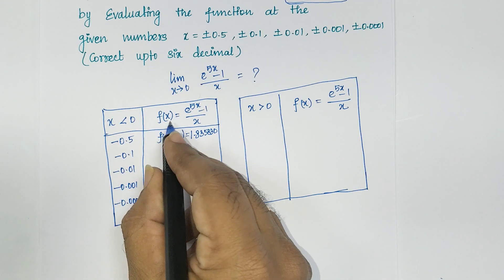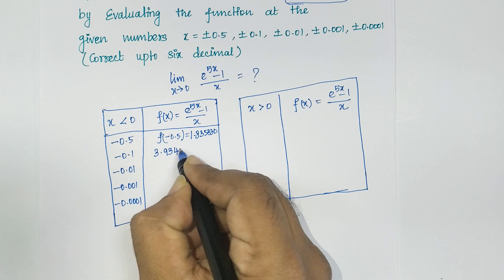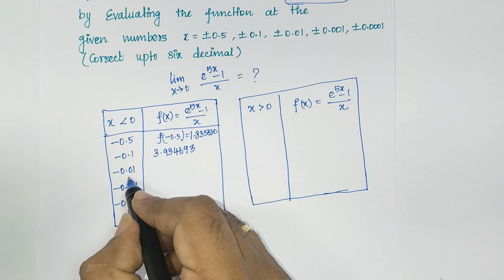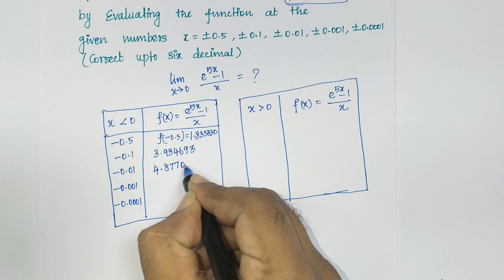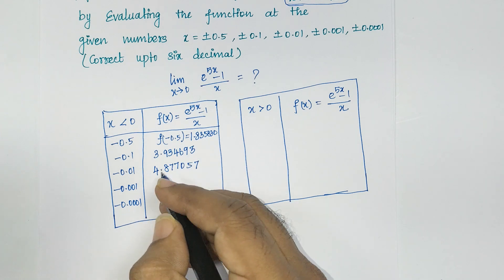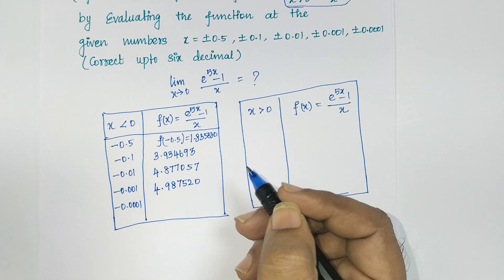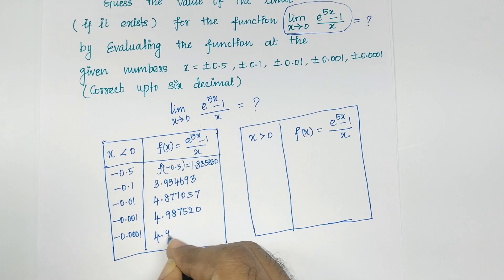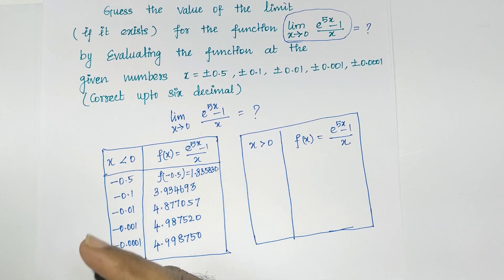When substituting minus 0.1 into the function, you will get 3.934693. When substituting minus 0.01, you will get 4.877570. When substituting minus 0.001, you will get 4.987520. And for the last one, minus 0.0001, substituting into the function gives 4.998750. These are the left-hand side values.